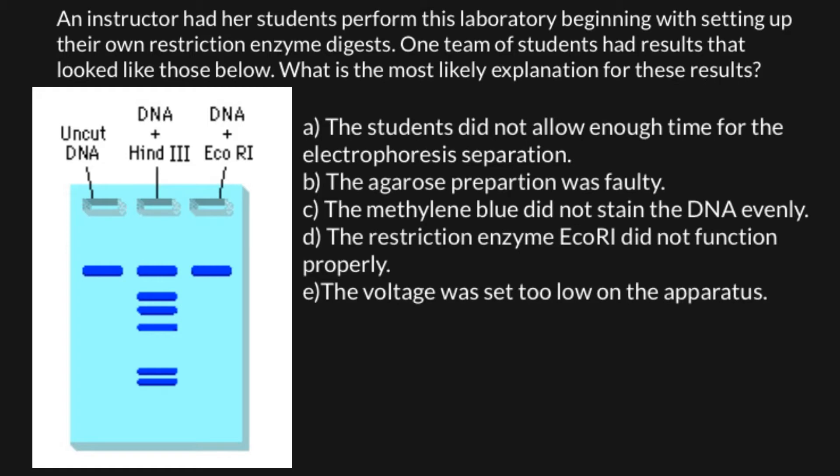First of all, I want to give you a sequence of the first restriction site for this enzyme, which is AAGCTT. And as for the second enzyme, the restriction site would be a sequence that is GAATTC.